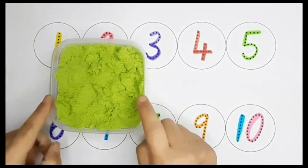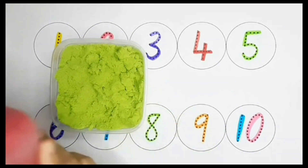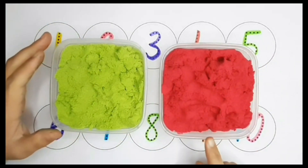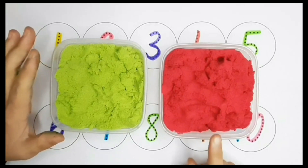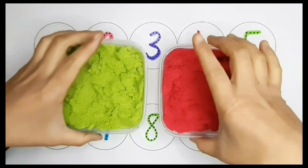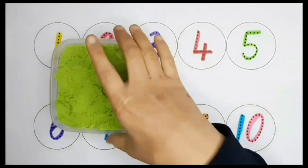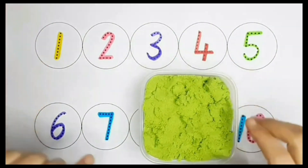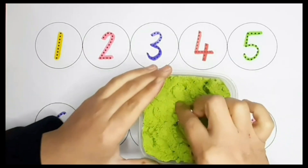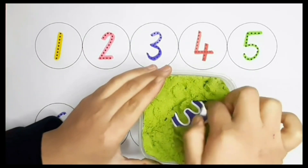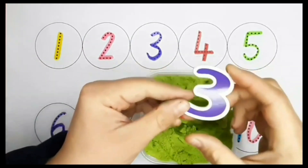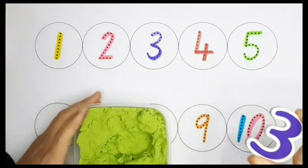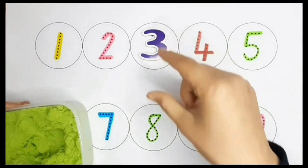We have green scenes with 5 numbers in them and red scenes with 5 numbers in them. Let's begin. Which number do you think is hiding in the scene? It's number 3. Do you help me to find number 3 on the board? Yes, here it is.